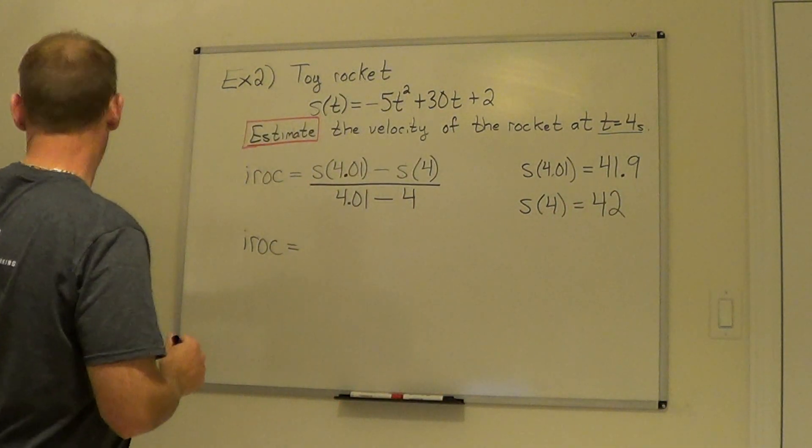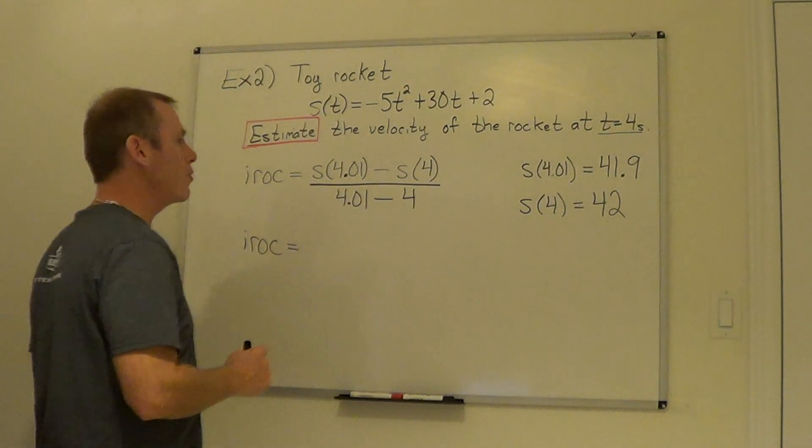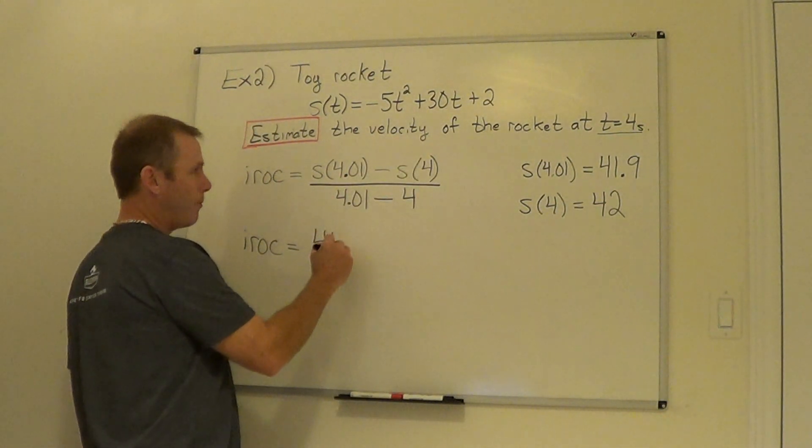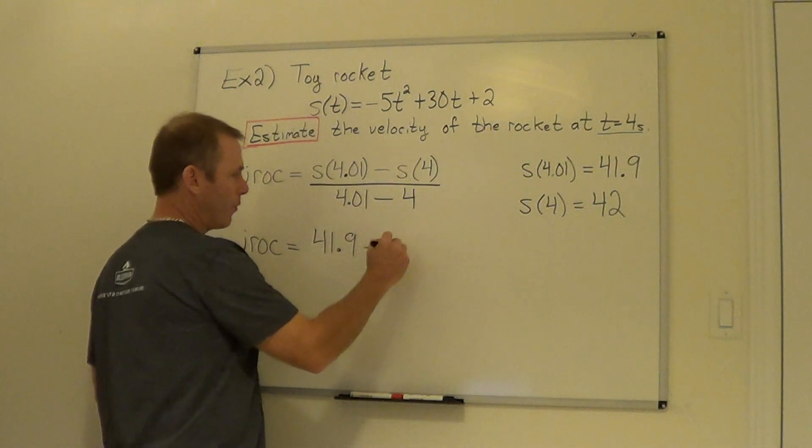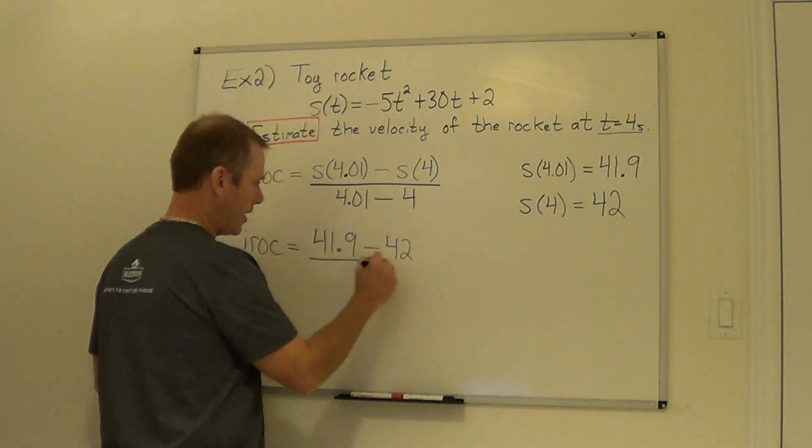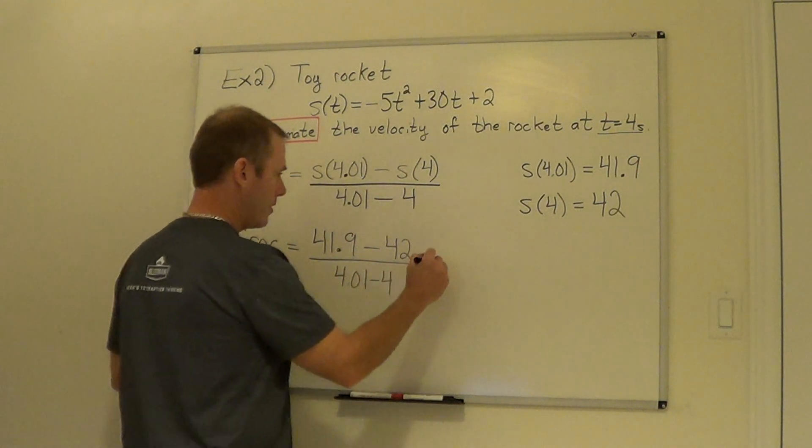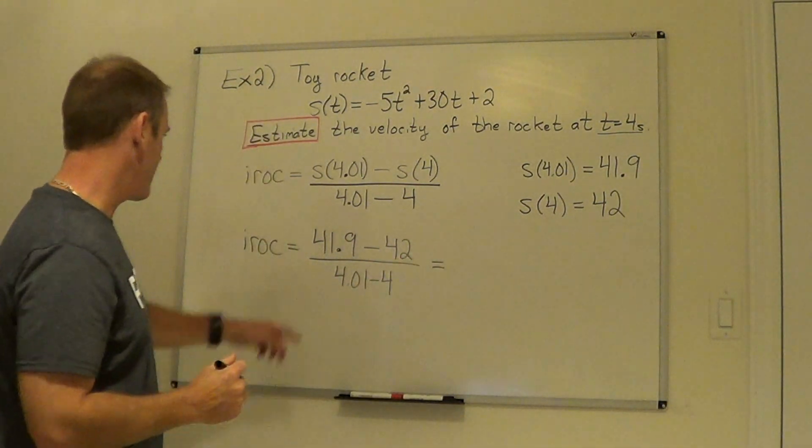So now I'm just going to substitute those values into our slope equation, so I have 41.9 minus 42, and in the bottom I've got 4.01 subtract 4. I do a little math here, let's see here.